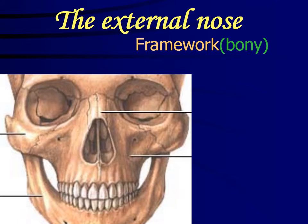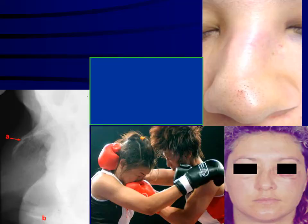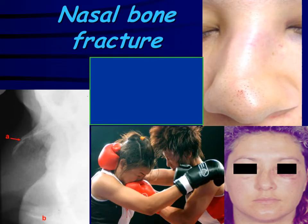Now for the bones of the external nose: first is the nasal bone, which is this front part that we call the nasal bone. Apart from this, we have the frontal processes of the maxilla. And then there is the pyriform aperture, which is clearly mentioned here in the diagram.